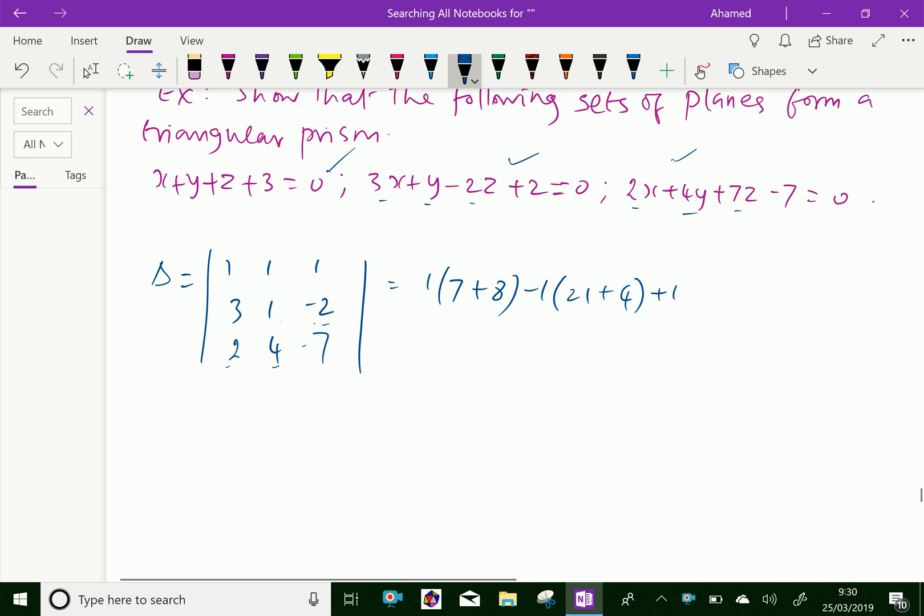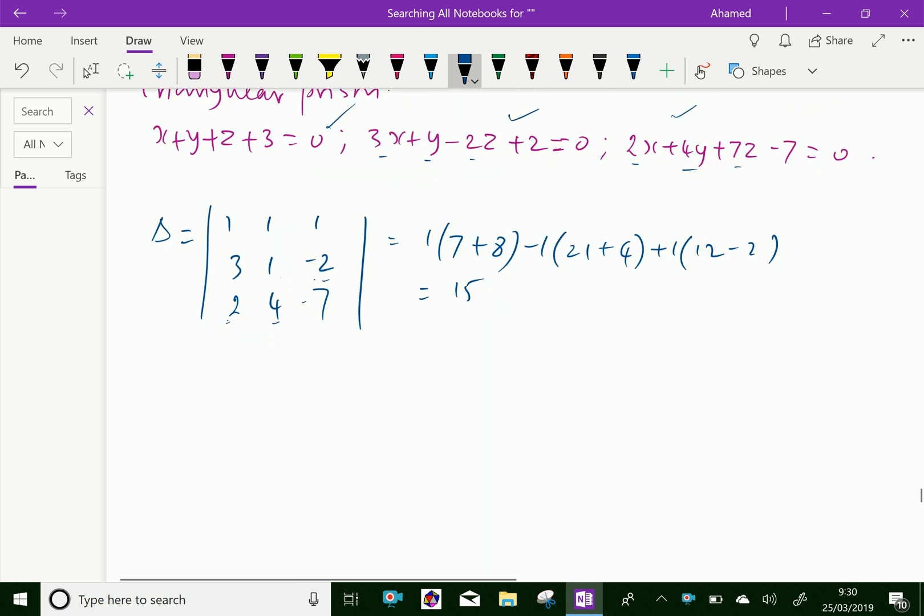And plus 1 equal 1 into, 3 into 4 is 12, 2 into 1 is minus 2, which equals 15, and minus 25 and plus 10, which is equal 0.